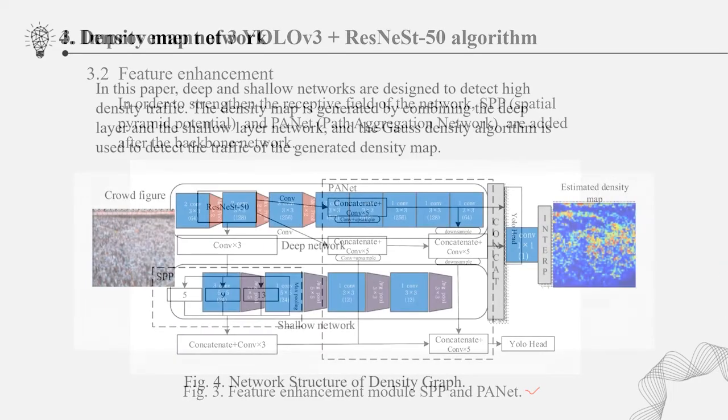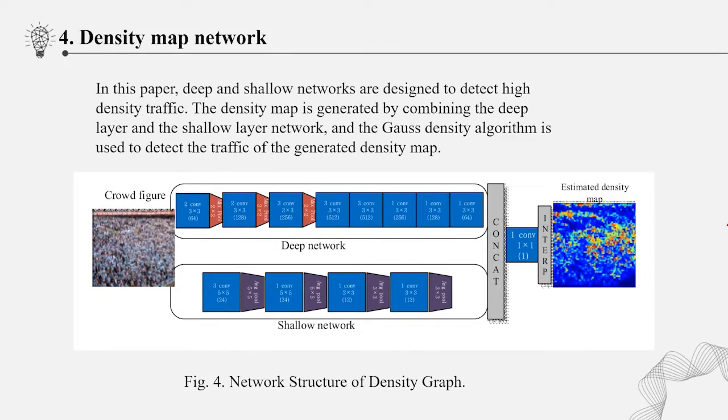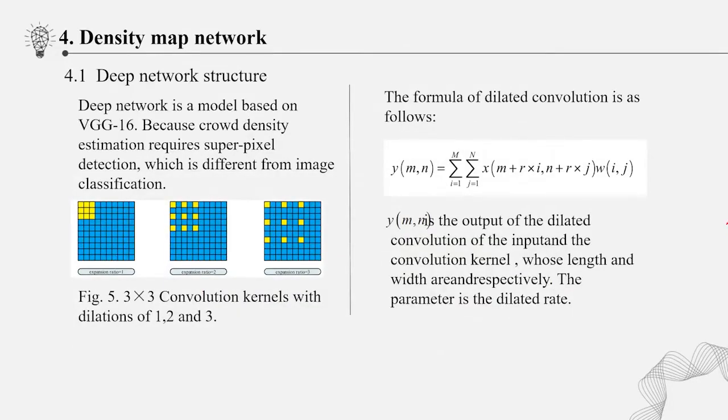Deep network structure. Deep network is a model based on VGG16. VGG16 network has five maximum pooling layers. At the same time, dilated convolution can aggregate multi-scale context information and keep the same resolution, so that SPP's kernel can replace pooling layer and convolution layer. The formula of dilated convolution is as follows.